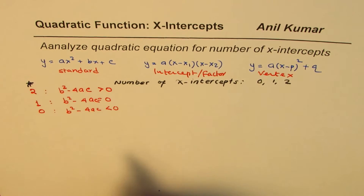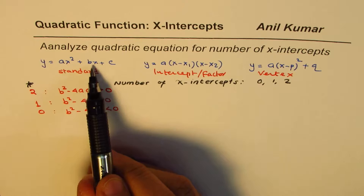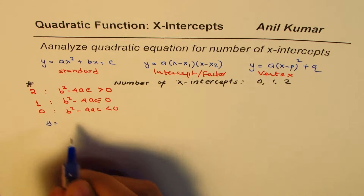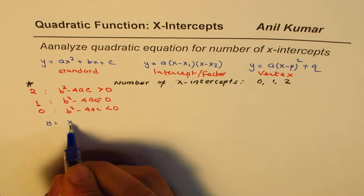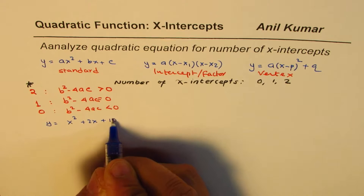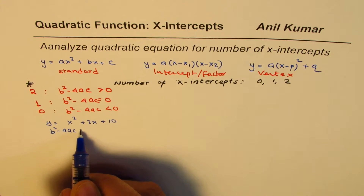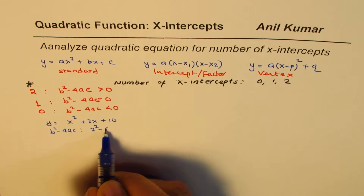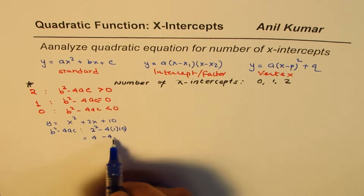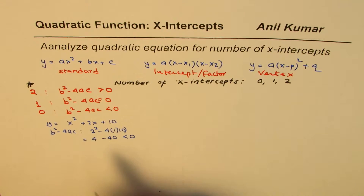Here, B is the coefficient of x, A is the coefficient of x², and C is the constant. For example, take y = x² + 2x + 10. B is 2, so B² - 4AC = 4 - 4(1)(10) = 4 - 40, which is negative — less than 0 — so this function has no x-intercepts.